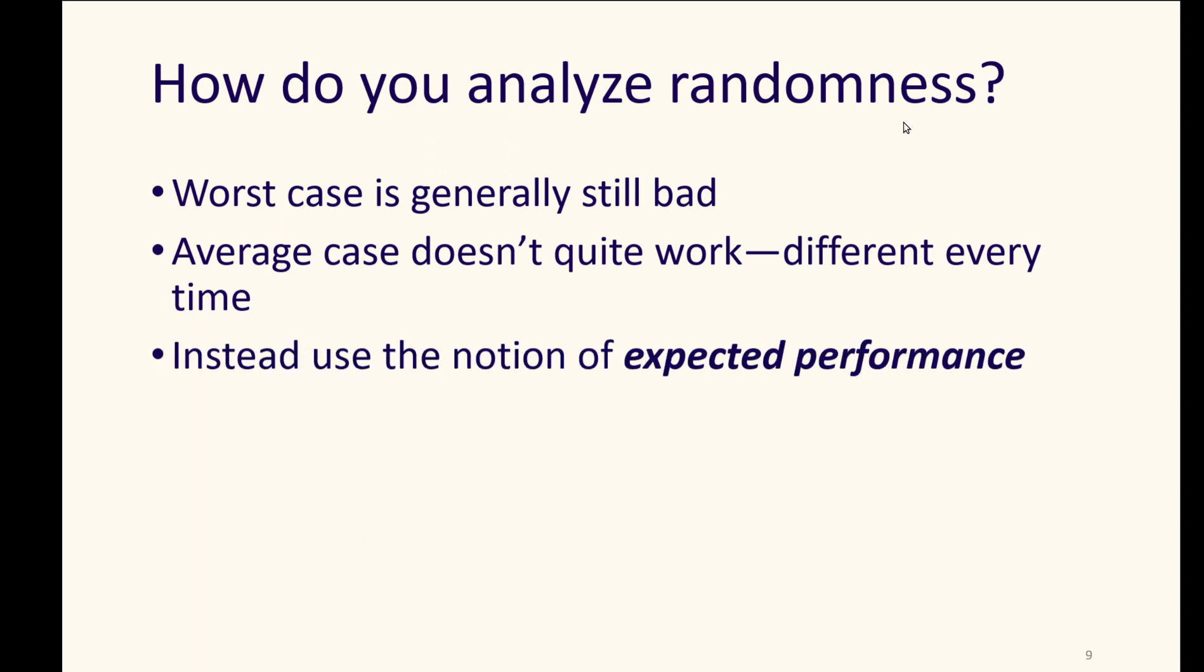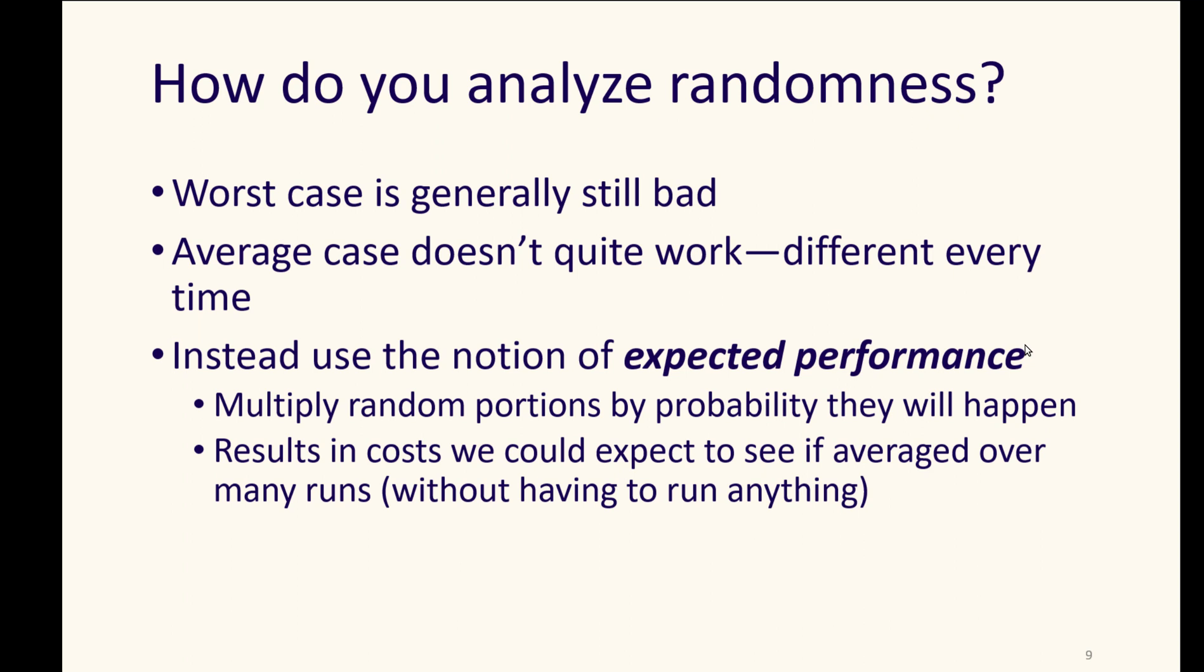And so we need to use the idea of expected performance. This is where we take the random portions of the code, and we multiply them by the probability that they will happen. So as we're doing insertions, we can think about the probability that there will need to be new hooks put in for those skips for those higher levels. And as we're doing finds, we can think about the probability that those skips will have been created for the different nodes along the way. We find the random portions of the code, and we multiply them by the probability that they would happen skipping or creating new levels. It's sort of like amortized time. It results in costs that we could expect to see if they were averaged over many runs, but we don't actually have to run anything to test it.